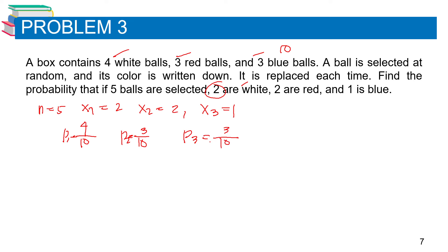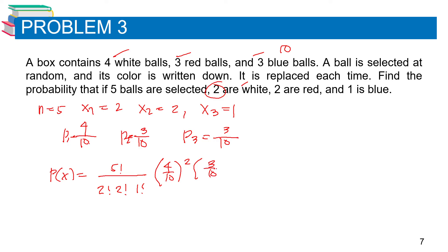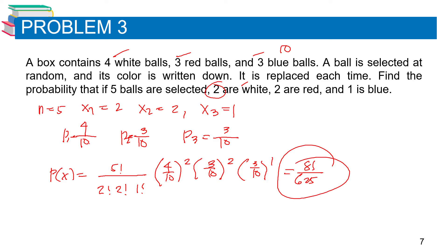Using the formula: P(x) equals 5 factorial over 2 factorial times 2 factorial times 1 factorial, multiplied by (4/10) raised to 2, times (3/10) raised to 2, times (3/10) raised to 1. Calculating this gives a result of 81 over 625. So this is the probability that 5 balls are selected with 2 white, 2 red, and 1 blue.